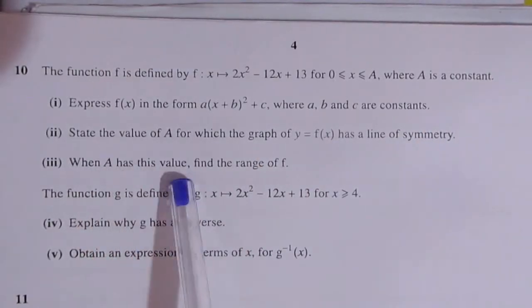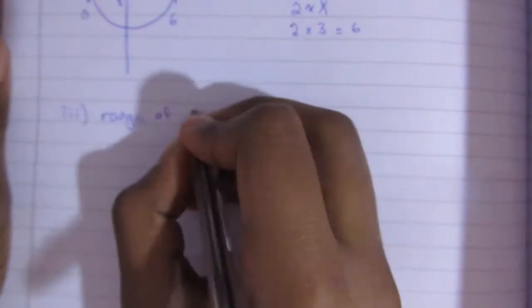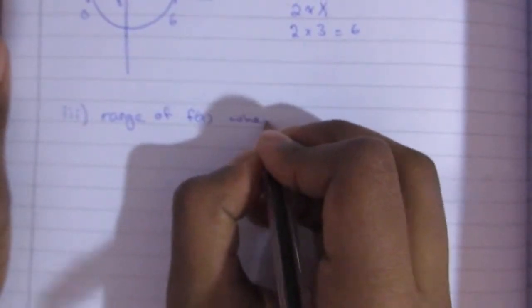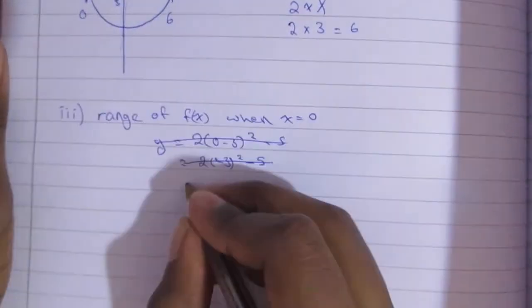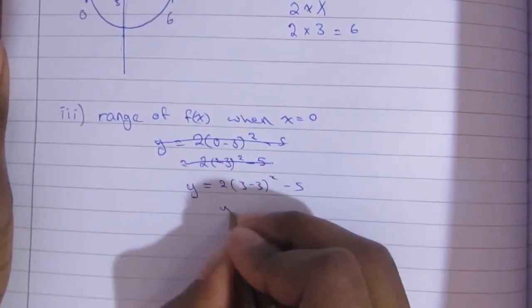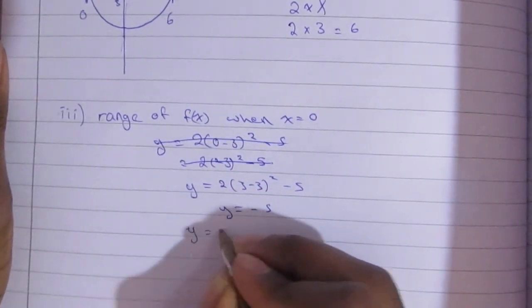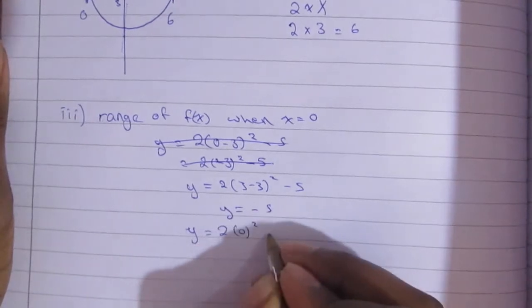On to the third part. When a has this value, find the range of f. So we're going to try to find the range right now. And what we're going to do is make x equal to 0. So we're going to use the completed square, and in order to make that part 0 again, remember we had to make x equal 3 in this case, so then y would end up equaling negative 5. So that is one of the limits.